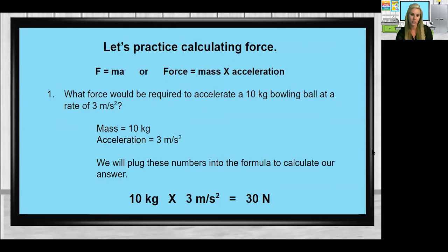Let's practice calculating force. Force can be written as a simplified formula right here: capital F equals lowercase m times a, or you can write out the whole thing. I always like to write out the shorthand version. You just have to remember what it means. What force would be required to accelerate a 10 kilogram bowling ball at a rate of 3 meters per second squared? So you've got to use the mass of 10 and the acceleration of 3 and plug those numbers into your formula. 10 times 3, you get a total of 30 Newtons. That is the force of that bowling ball.